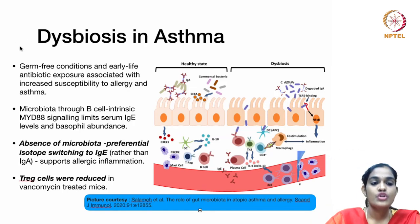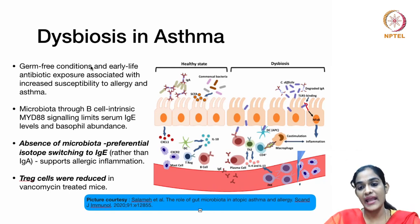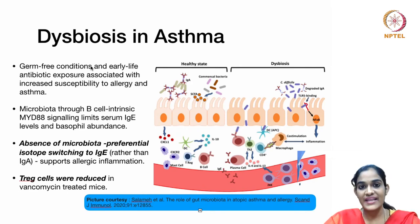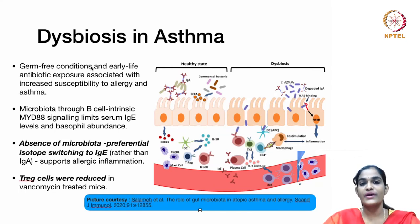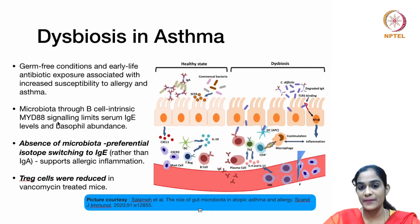Dysbiosis and asthma: children in germ-free conditions and those exposed to antibiotics in early life are associated with increased susceptibility to allergy and asthma. The microbiota through B cell-intrinsic MYD88 signaling limits the conversion of serum antibodies to IgE type and lessens basophil abundance. When microbiota is absent, there is a preferential switch to IgE class which supports allergic inflammation. Experimental models where mice were treated with vancomycin showed fewer T regulatory cells, as these antibiotics kill microorganisms that help in the development and maintenance of T regulatory cells.